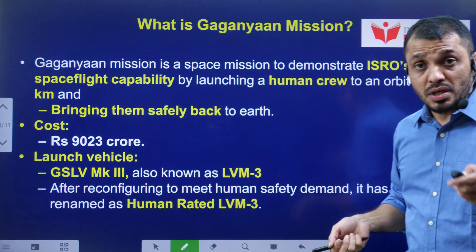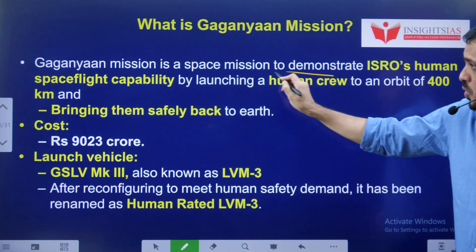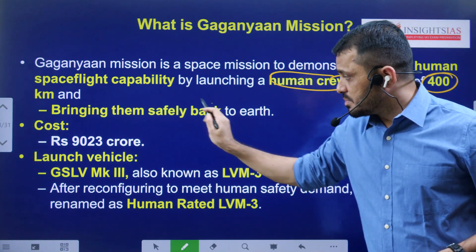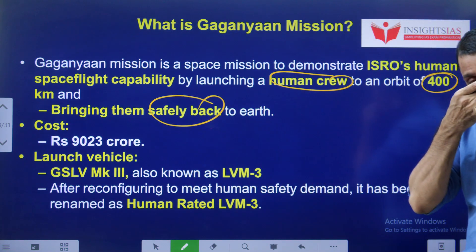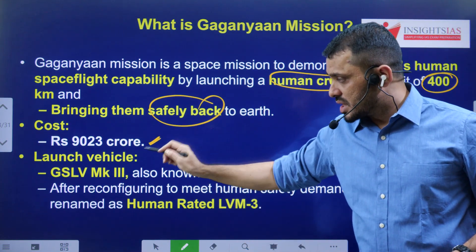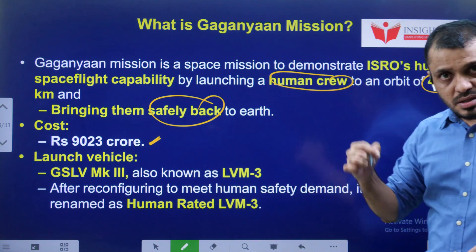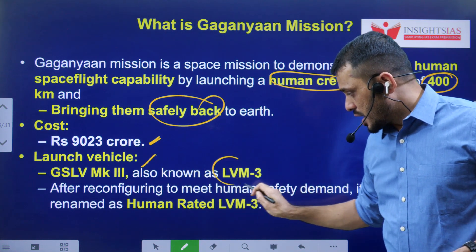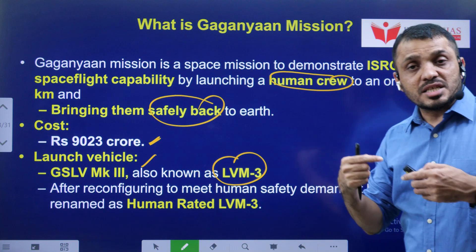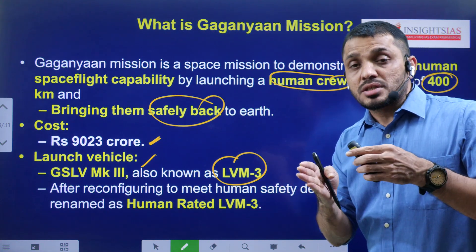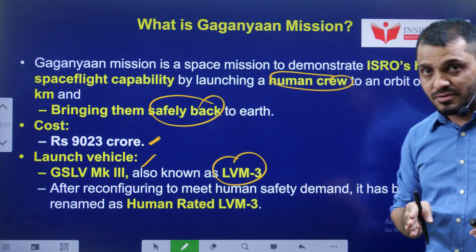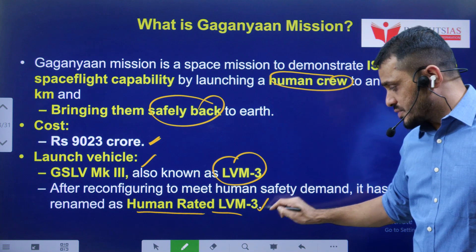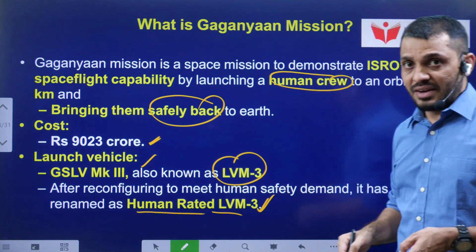Gaganyaan is about the human space flight - sending humans to a height of 400 kilometers and bringing them safely back to Indian Ocean waters. The cost is around 9,023 crore. In the real scenario, the launching vehicle we are going to use is GSLV Mark 3, also known as LVM 3. As this launch vehicle is modified in a way that astronauts can survive, we are now calling it the Human Rated Launch Vehicle Mark 3, or Human Rated LVM 3.